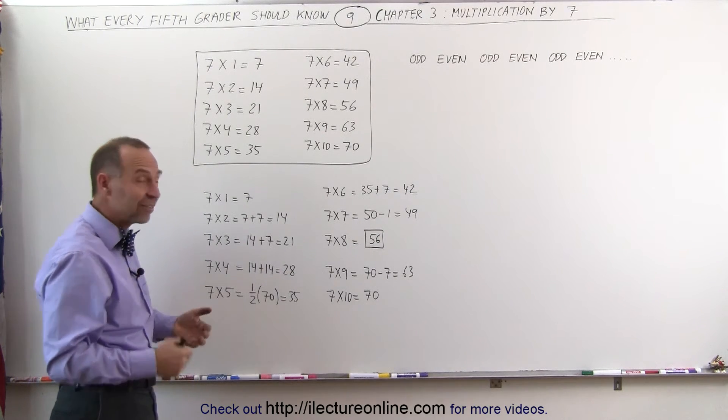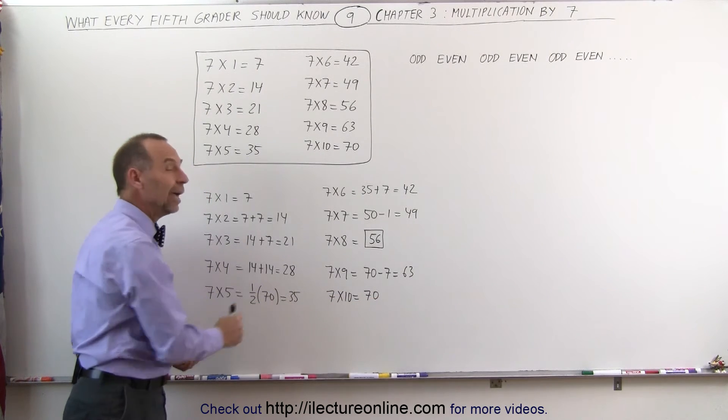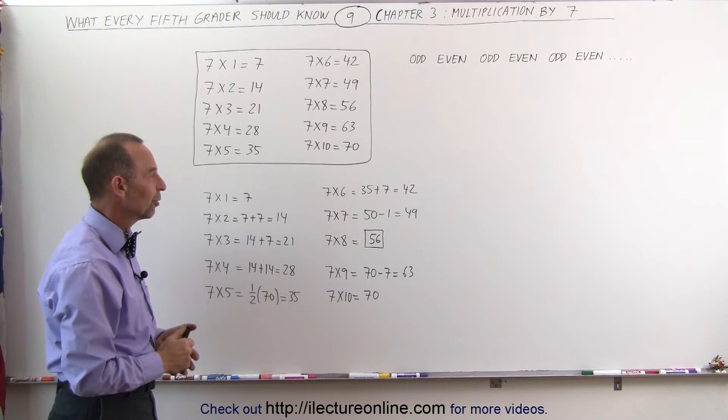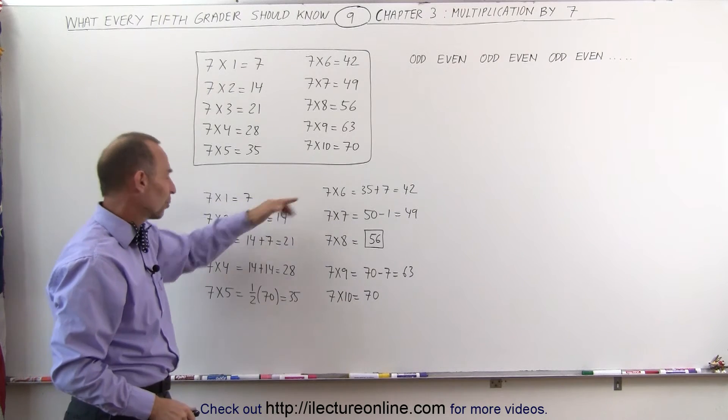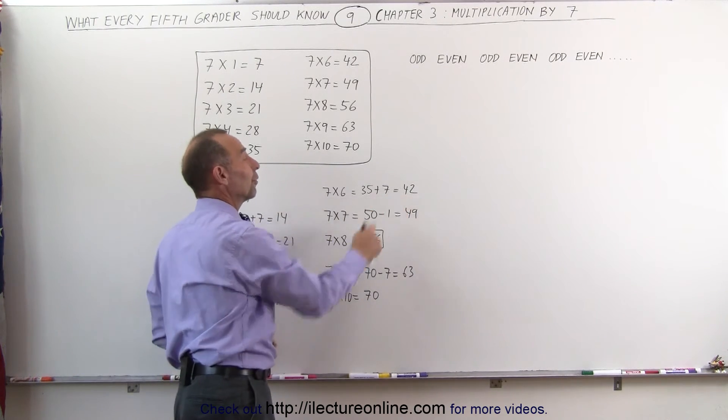7 times 5 is the halfway point. We take 7 times 10, which is 70, and divide it by 2, and we get 35. That's very straightforward. 7 times 6, we take the answer for the halfway point, 35, and add another 7 to it, and we get 42.